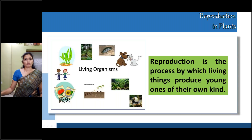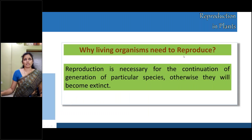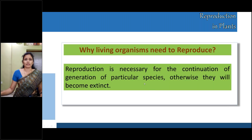So what is this process, children? Producing their young ones — all these living organisms produce their young ones, and this process is called reproduction. Why do living organisms need to reproduce? Reproduction is necessary for the continuation of a particular species; otherwise they will become extinct. Extinct means disappearing from the earth. If reproduction does not occur, the continuation of life will not be there and that animal or plant will disappear from the earth.